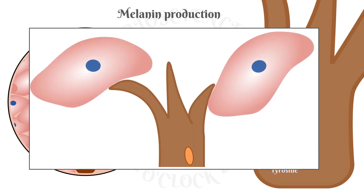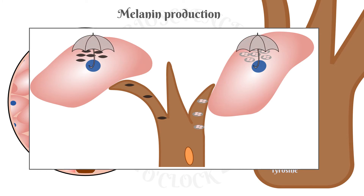Once the melanin has been synthesized in the melanosomes, the melanosomes migrate through the melanocyte dendrites to the keratinocytes, where they form a cluster over the exposed side of the keratinocyte nucleus, forming an umbrella in order to protect it from UV rays.